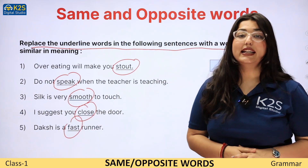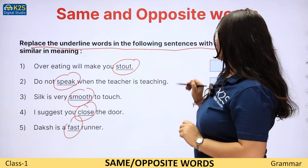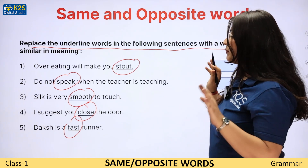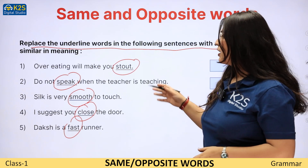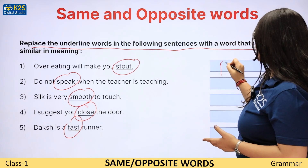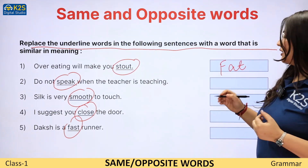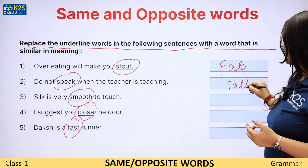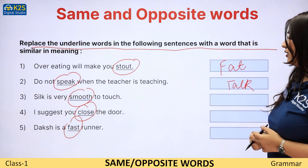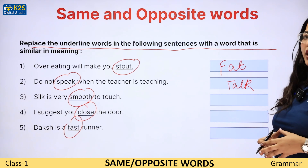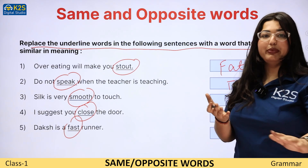Aap ne in words ke liye kya use karna hai? Similar word. Similar word matlab same. So stout ka similar kya ho jaega? Fat. Speak ka similar? Talk. Smooth ka similar kya ho jaega? Plain — which is something which is very plain.